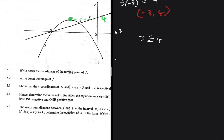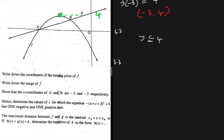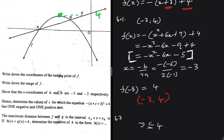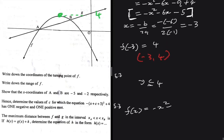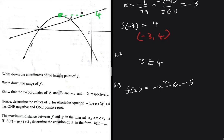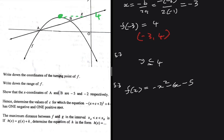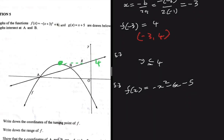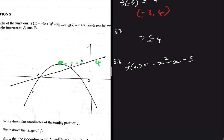5.3: show that the x-coordinates of A and B are -5 and -2. So we have our function f(x) = -x² - 6x - 5. To find the x-coordinates of A and B, we equate f(x), our parabola, and g(x), our straight line, where g(x) = x + 5. So we get: -x² - 6x - 5 = x + 5.